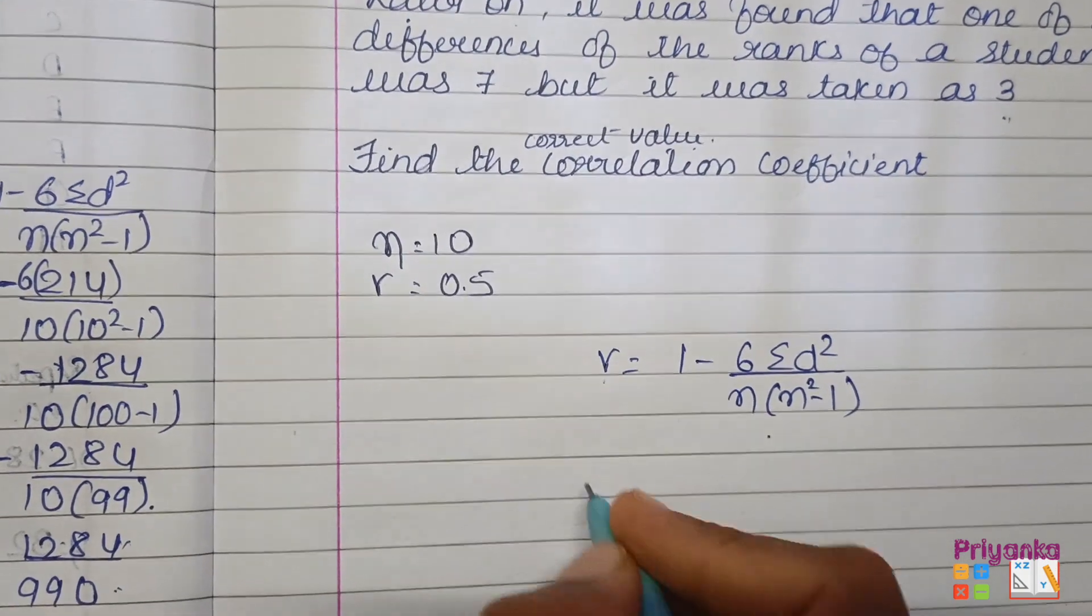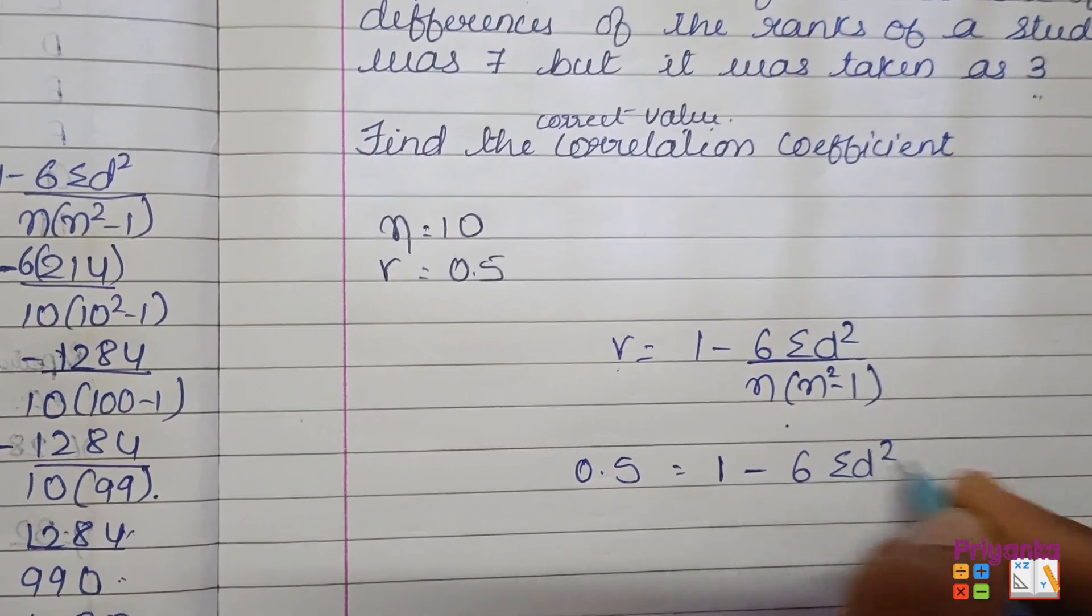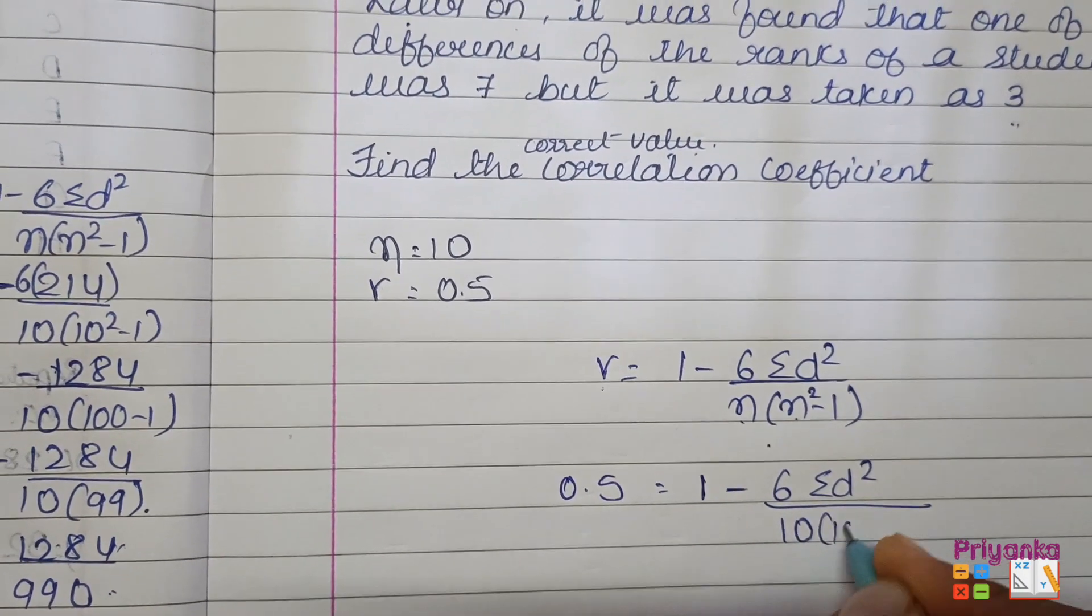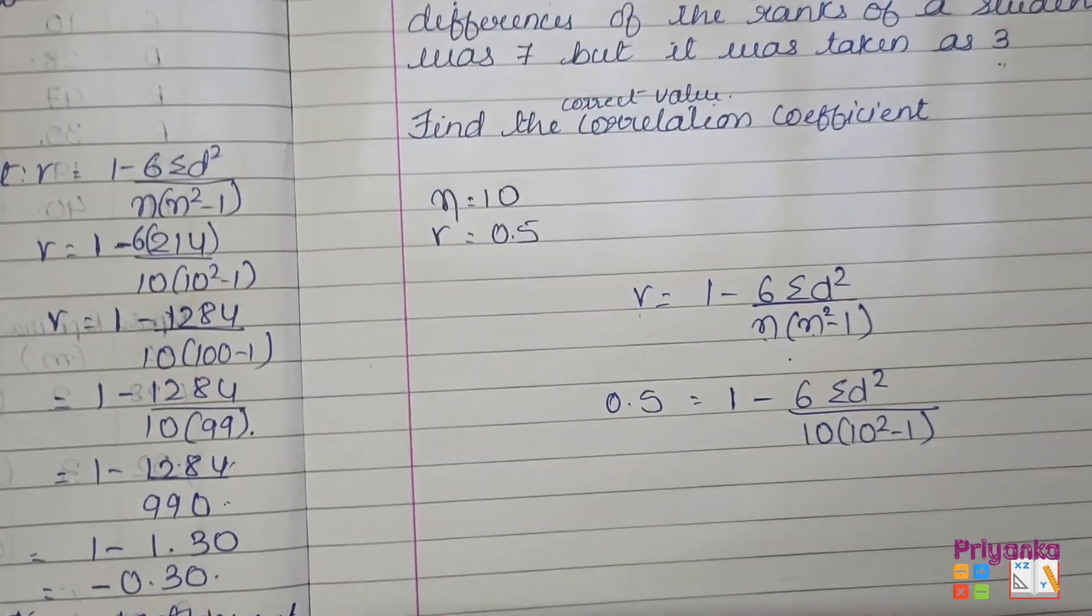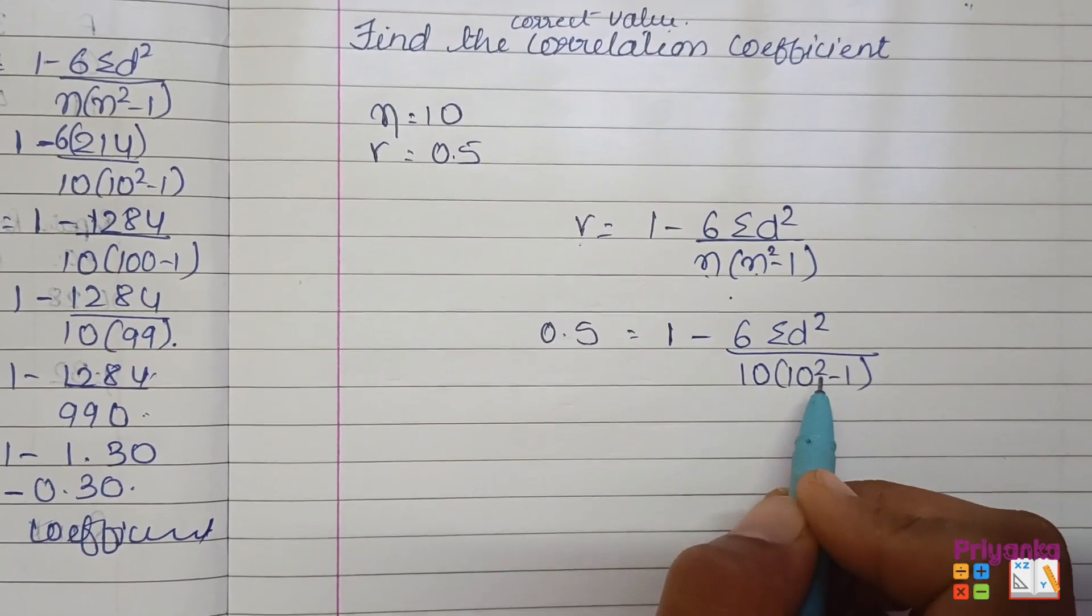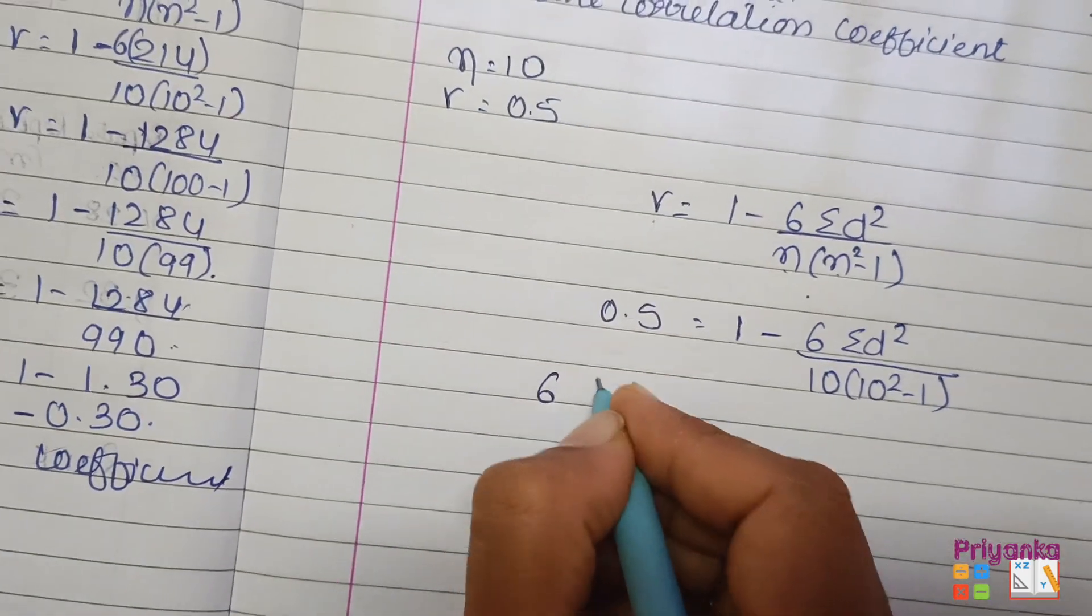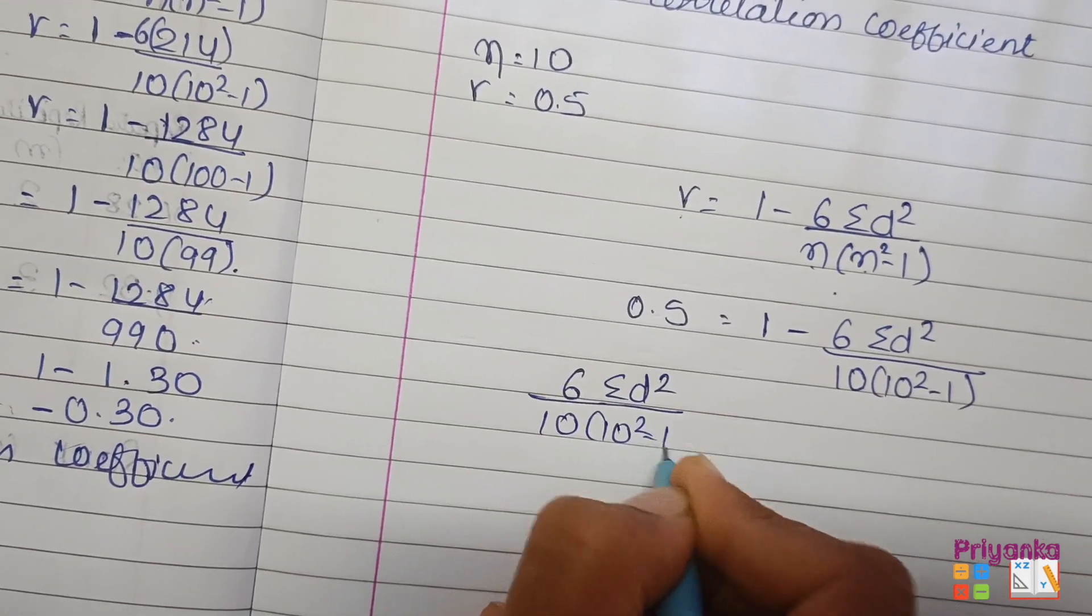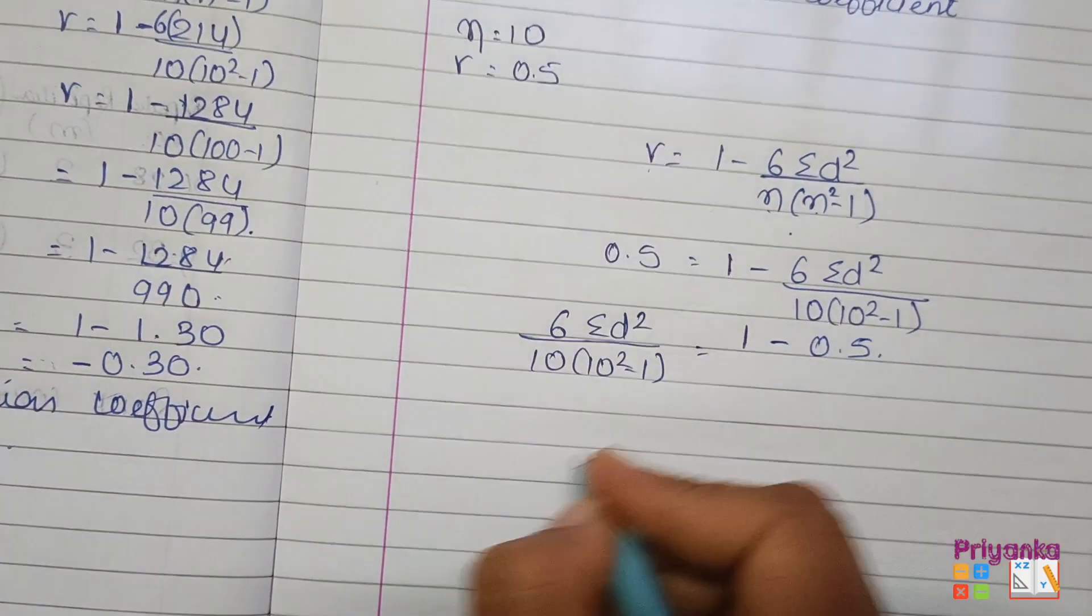So let's start the calculation. Keep the formula first, just keep the information. The r which has been already given is 0.5. 1 minus 6 sigma d square, which value we don't know. n is given 10 and 10 square minus 1. This is the information provided in the question. So first of all let's make a calculation on this. Let's switch this information over here and take this information back over this side.